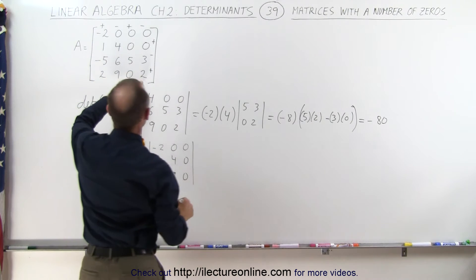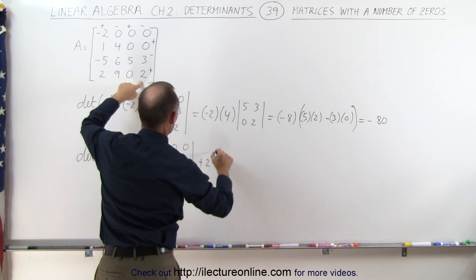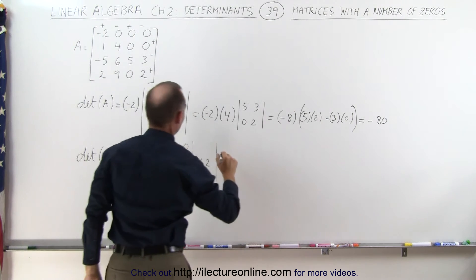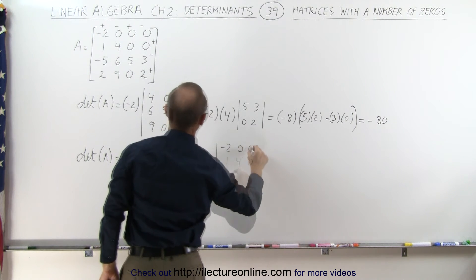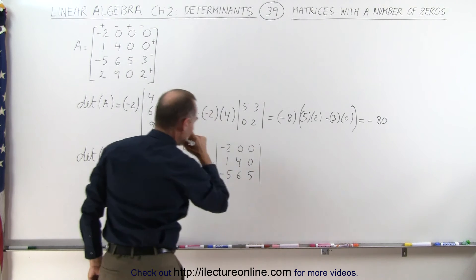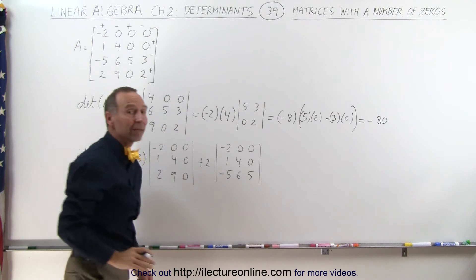And then we take this one right here, so it would be plus 2 times the matrix. If we cross out this row and this column, we have those nine elements left. So minus 2, 0, 0 and minus 5, 6 and 5. And that should give us the same result as we had before.